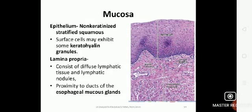Histologically, the esophagus, like the rest of the GIT, is composed of 4 to 5 layers. The first layer that faces the lumen is the mucosa that lines the length of the esophagus. It has a non-keratinized stratified squamous epithelium.